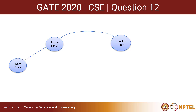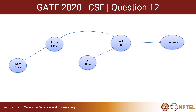After completion of execution, the process is taken to the termination stage where it terminates. Also, it may happen that the process requires certain IO operations. In that case, the process is taken from the running state to the IO state, also known as the blocked state. After completion of the IO operations, the process is taken back to the ready state.